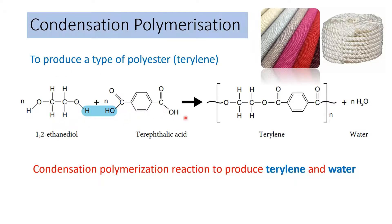For condensation polymerization producing terylene: ethane-1,2-diol has an -OH group at each end. The H from the -OH combines with the -OH from terephthalic acid to release water as the byproduct, and terylene is produced. Terylene is a fabric — it is the material used to make curtains and curtain ties.